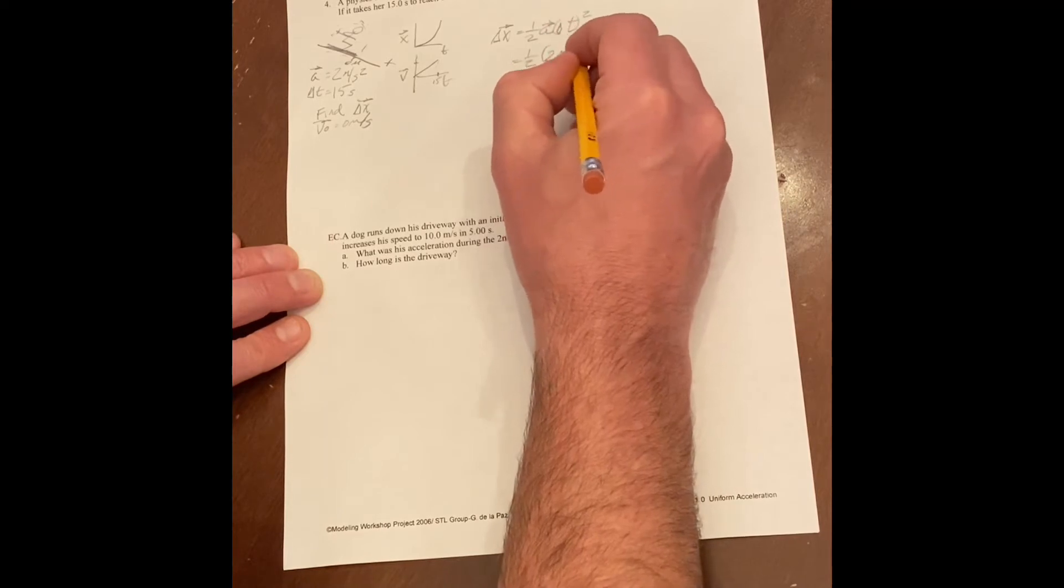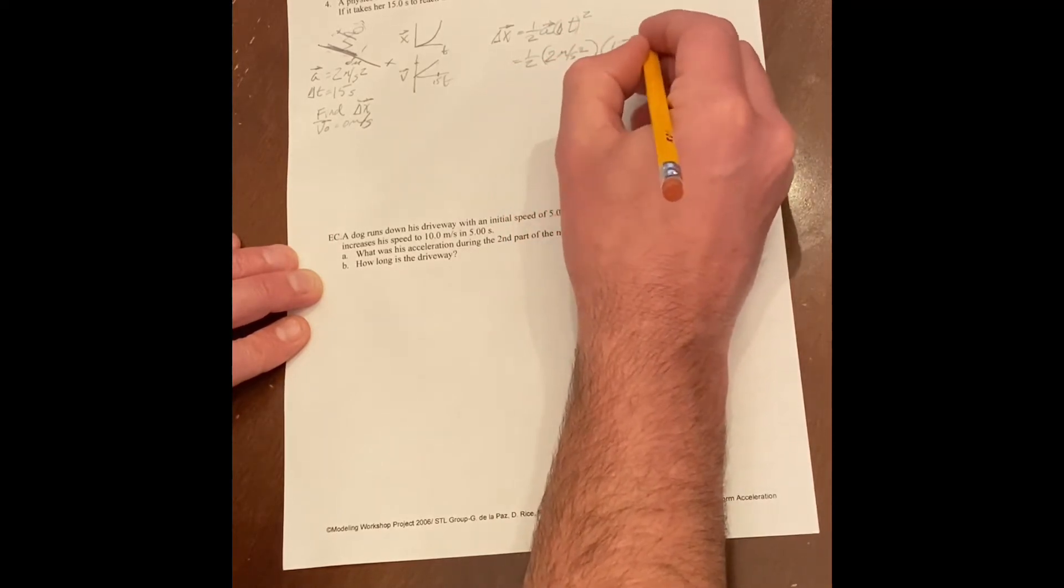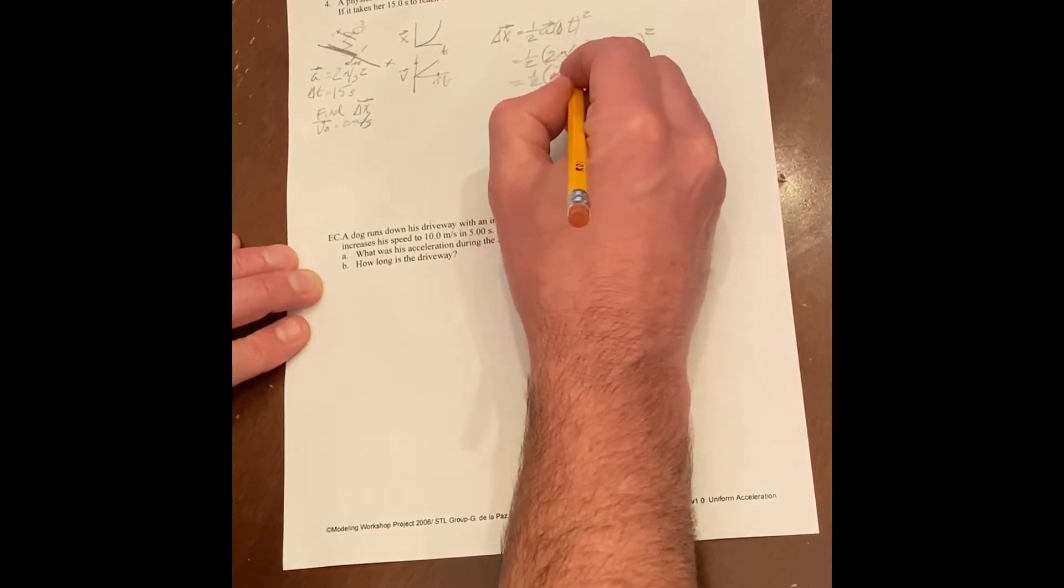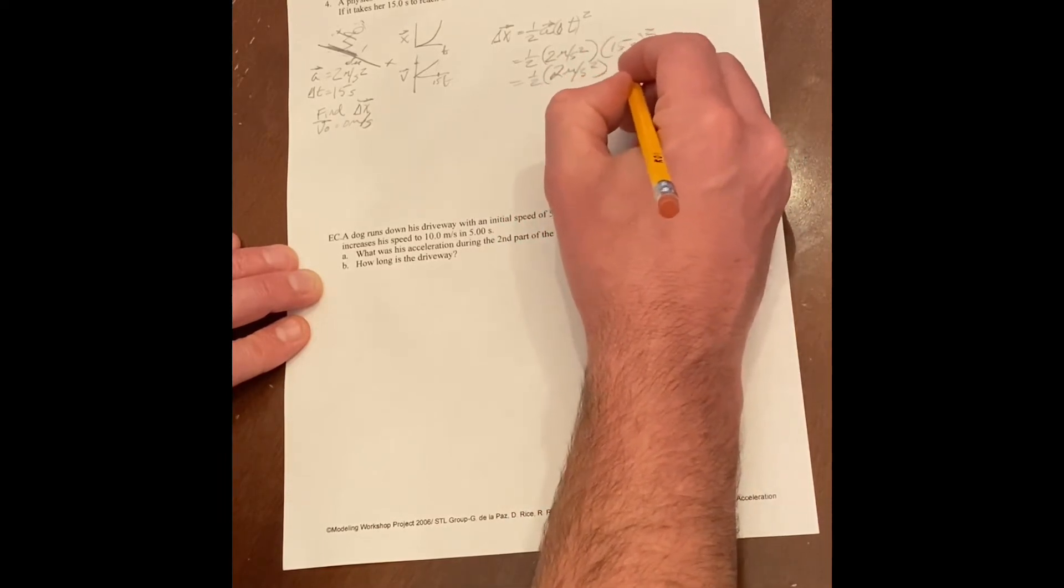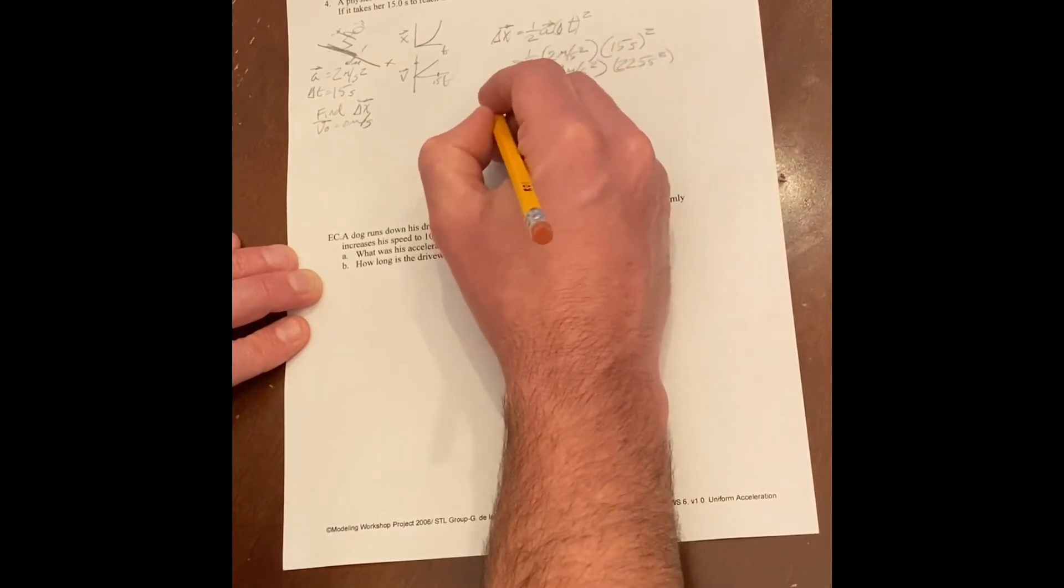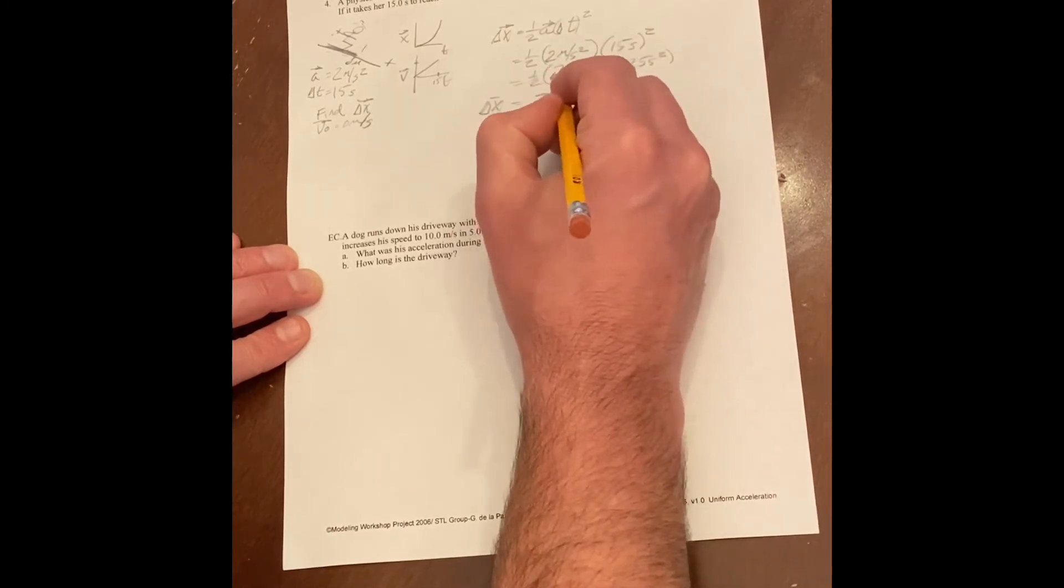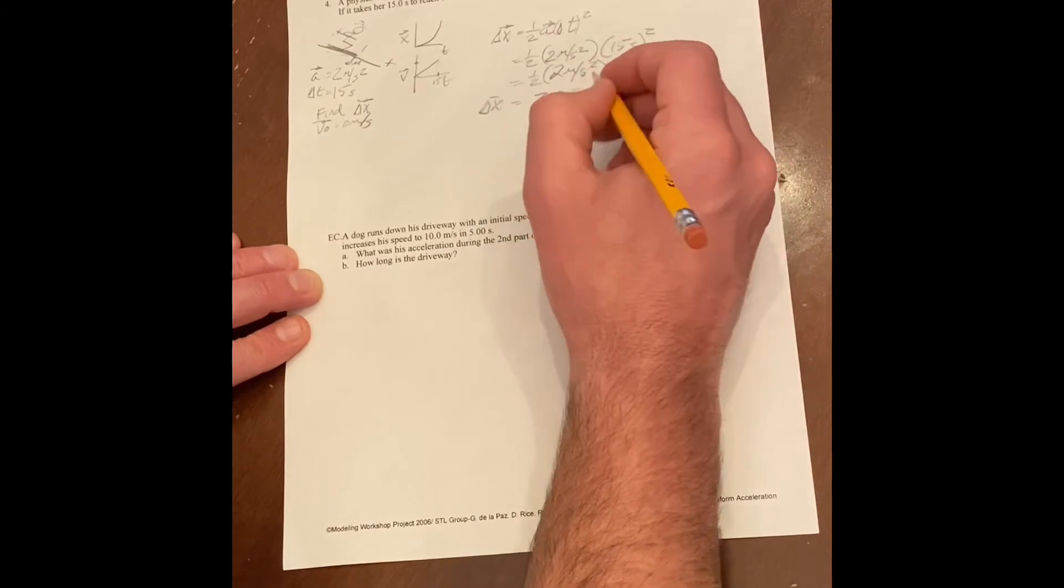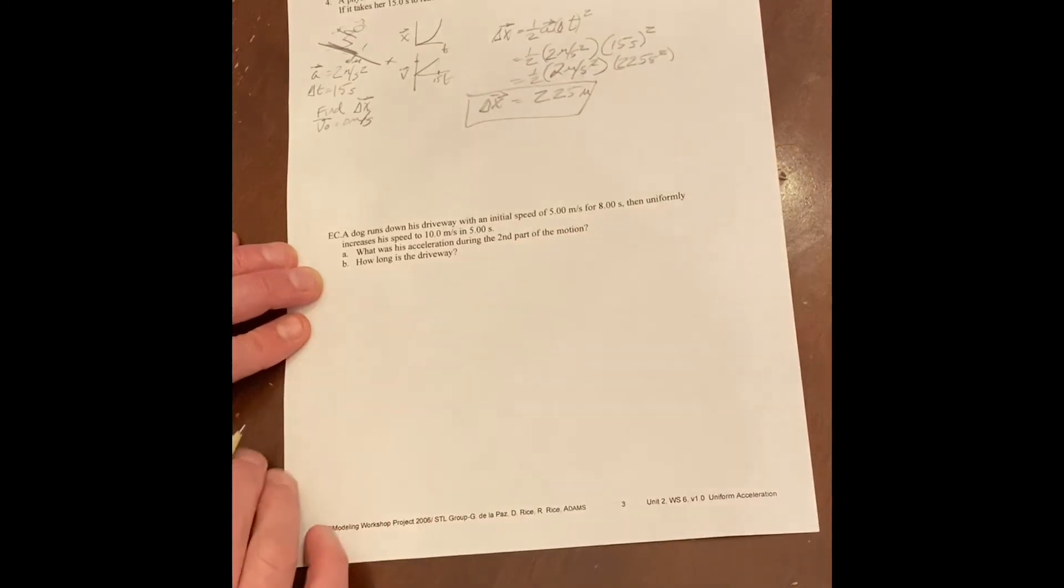So we can just plug it in from there and go. The acceleration was two meters per second squared times our change in time, which is 15 seconds, which has to be squared. Keeping all this the same, two meters per second squared, 15 seconds times 15 seconds is 225 seconds squared. And our change of position, one half of two is one and one times 225 is 225 meters per second squared times second squared, second squared cancel out. And the length of the slope is 225 meters.